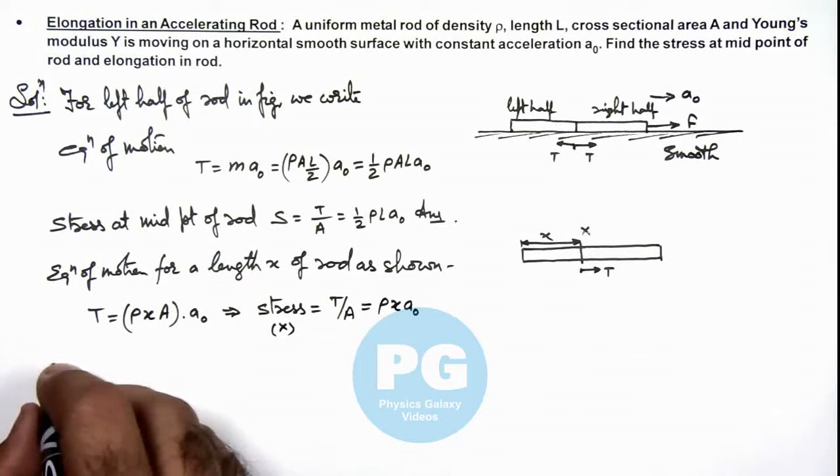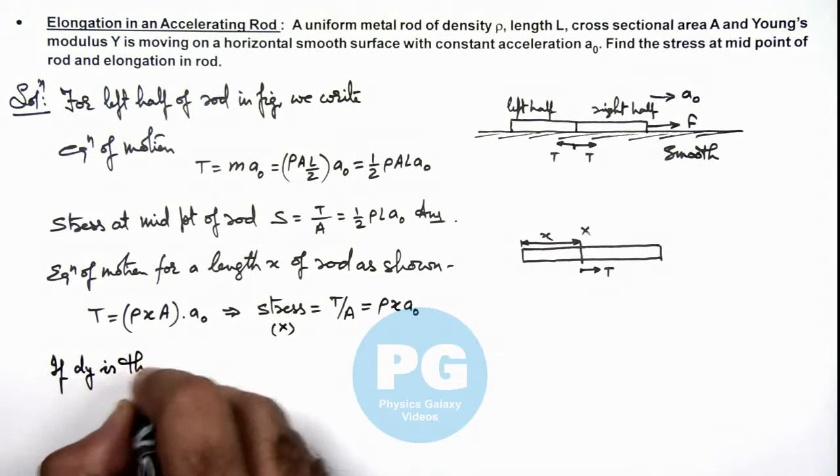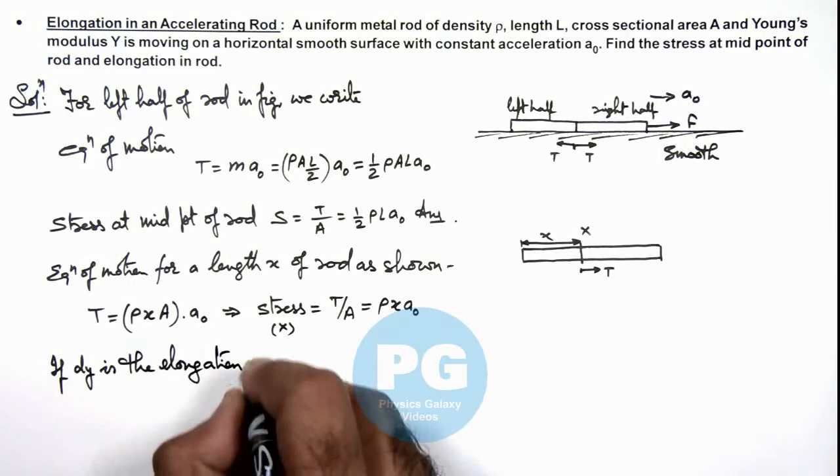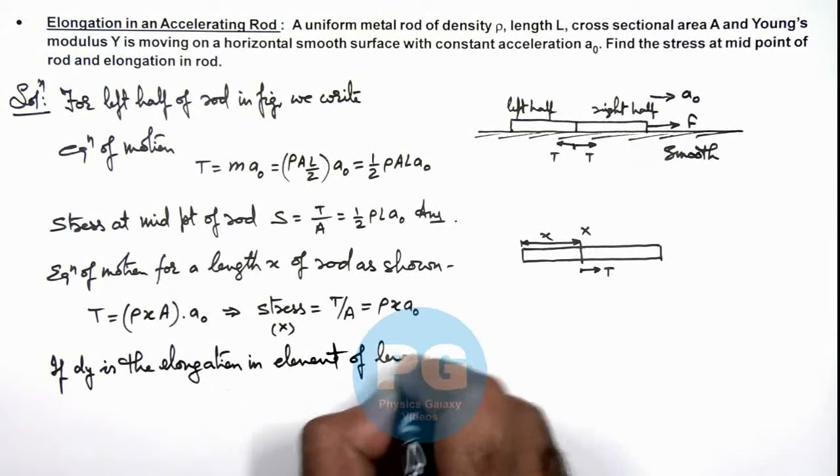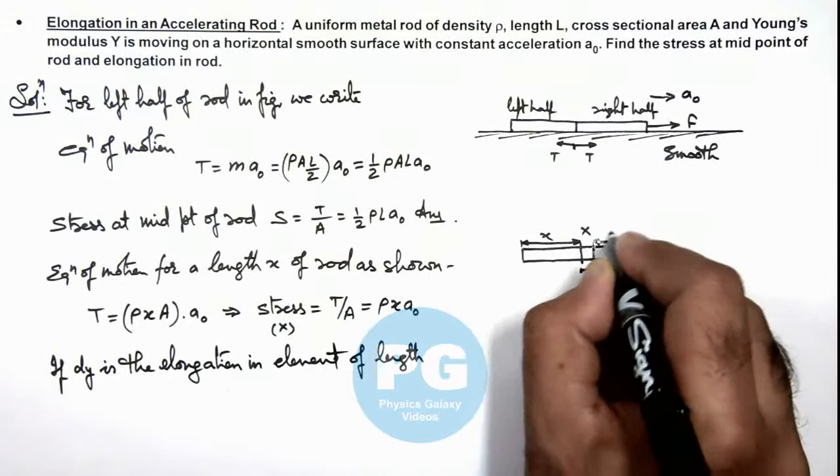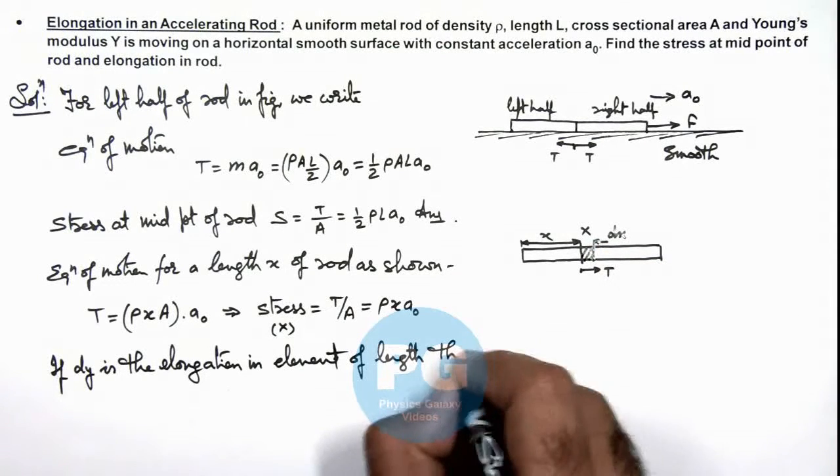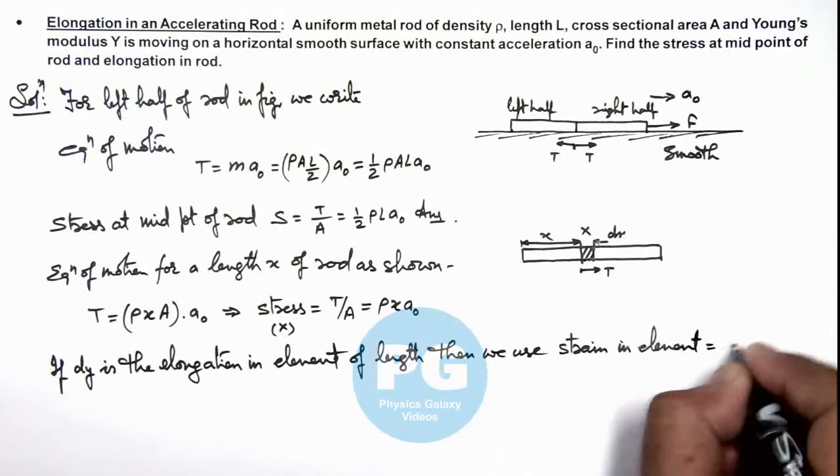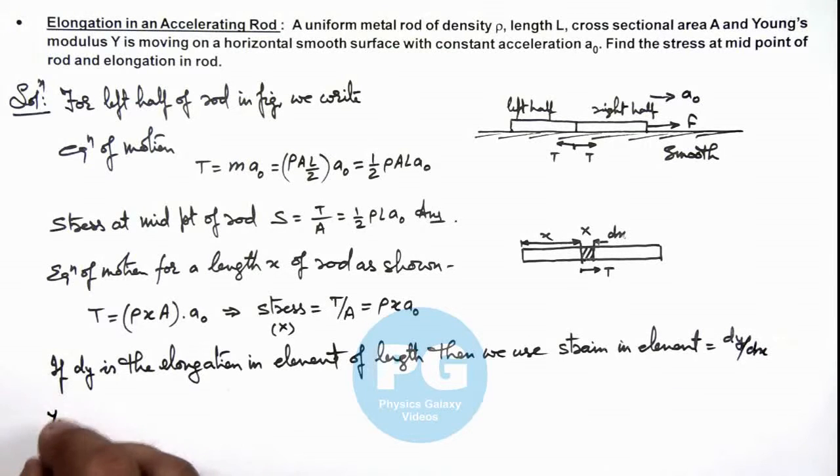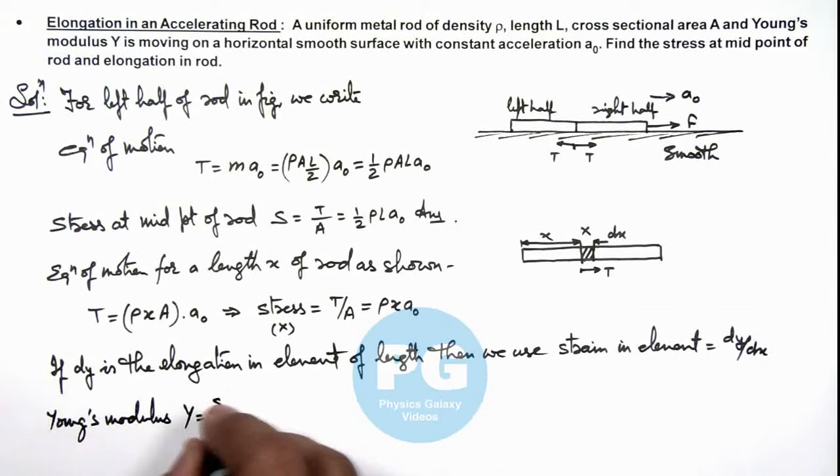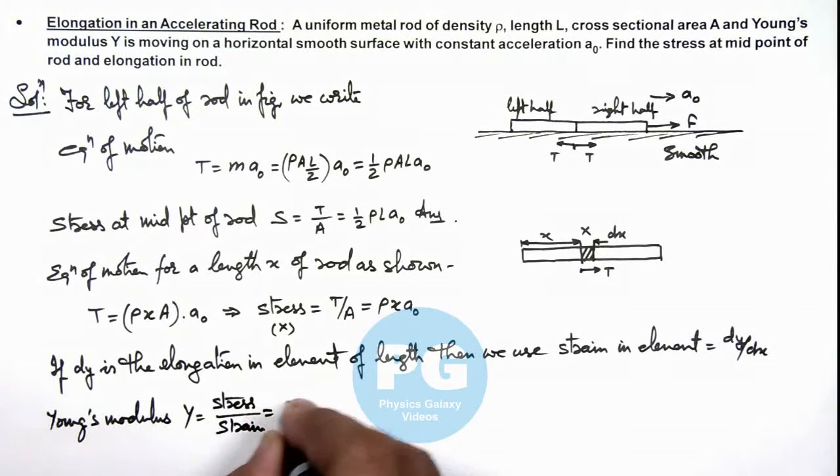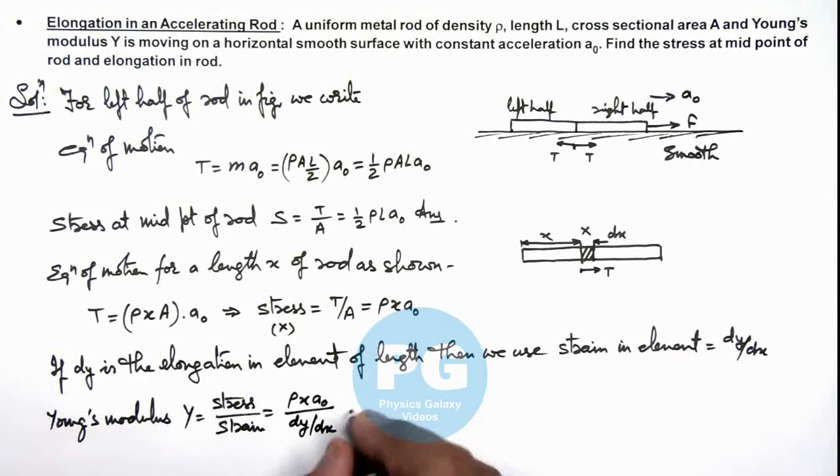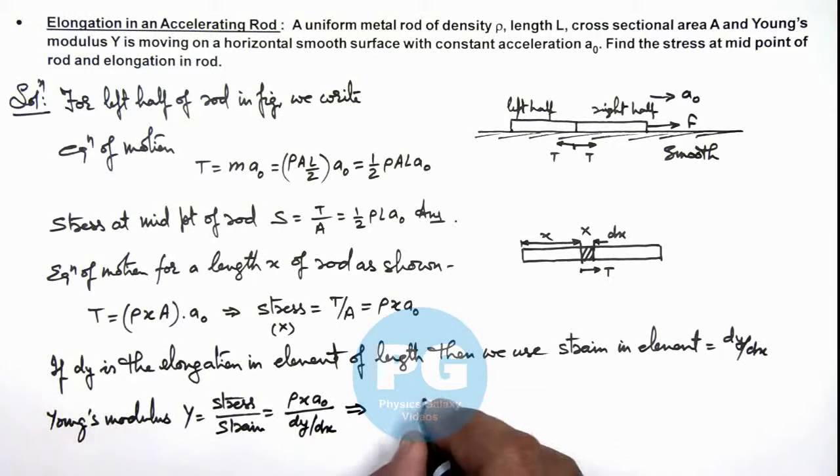dY is the elongation in element of length dx. Here we consider an element which is of width dx over here. Then we use strain in element can be written as dY/dx. We can further write the Young's modulus of rod is equal to stress by strain. Here it can be written as stress is ρxa₀ and strain is dY/dx, which on simplification gives us the value of dY, that is equal to